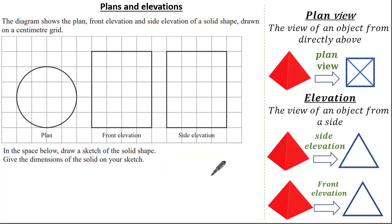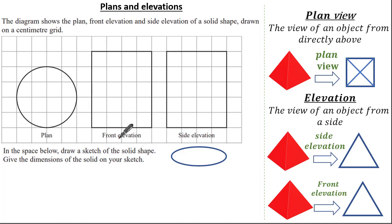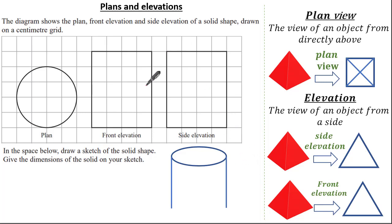Making this more three-dimensional, you can see we have a circular top, so I'm simply going to identify the circular top of my solid here. Given that our front elevation — when you're standing directly in front of it — has straight sides, I'm going to add that to my diagram. The side elevation is exactly the same as the front elevation, so there won't be any difference there.